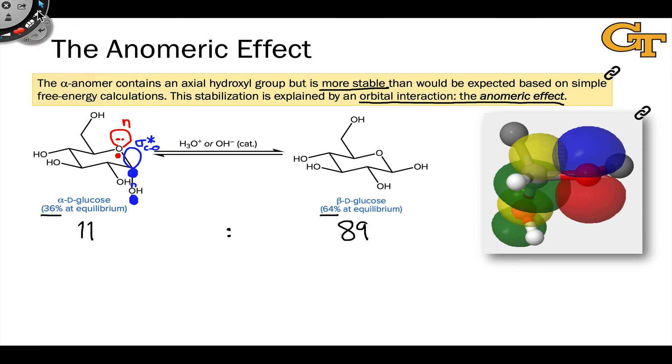Although the beta anomer does still have that axial lone pair, that lone pair is not well aligned with the C-O sigma star orbital now that the C-O bond is in an equatorial position. So there's no interaction in the beta anomer.